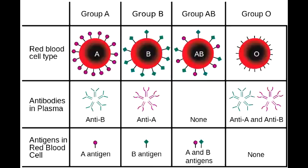What does it mean if you are of blood group AB? If you are of blood group AB, that means you have both A and B antigen on your red blood cell surface but no antibodies in the plasma. Therefore, this makes you a universal recipient — you can receive blood from blood group A, B, and O. You are also a universal donor of your plasma because there are no antibodies in your plasma, so your plasma can go to anybody without causing reactions.